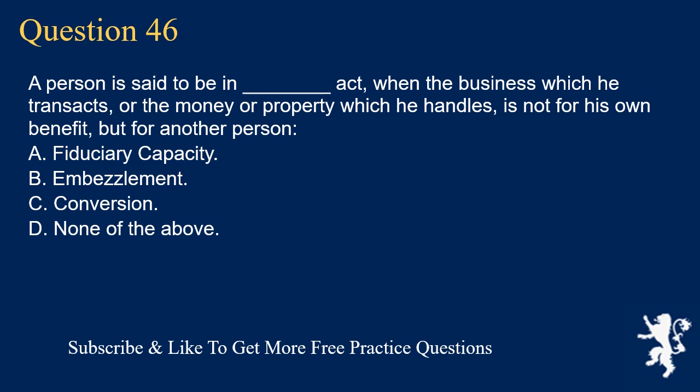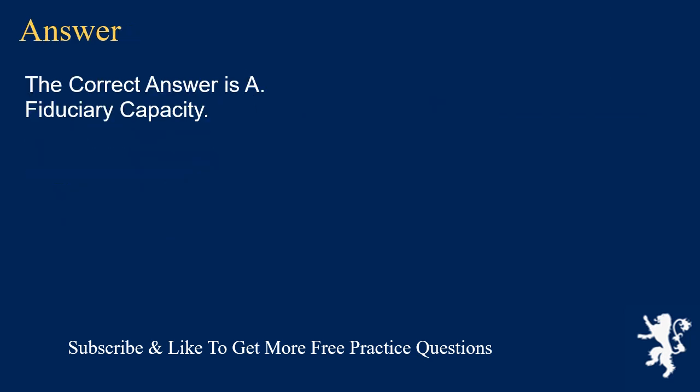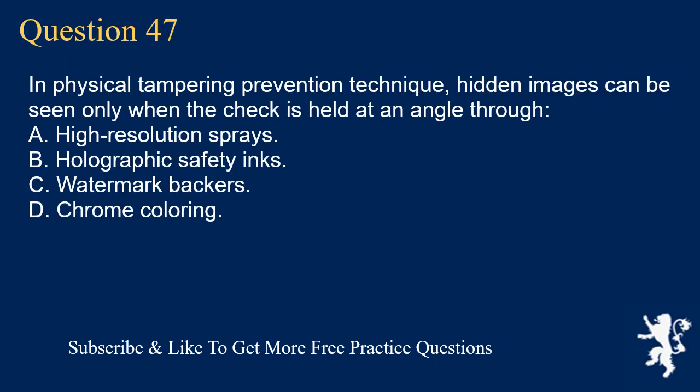Question 46: A person is said to act in an underscore capacity when the business which he transacts, or the money or property which he handles, is not for his own benefit, but for another person. A. Fiduciary capacity. B. Embezzlement. C. Conversion. D. None of the above. The correct answer is A. Fiduciary capacity.